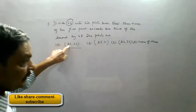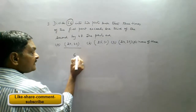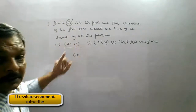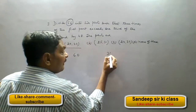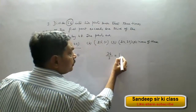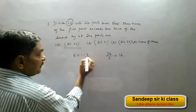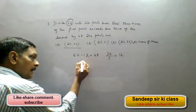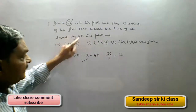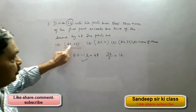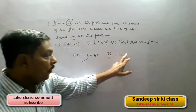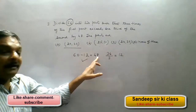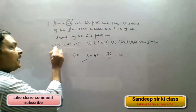Checking option A (20 and 36): 3 times the first part is 3 × 20 = 60. One-third of the second part is 36 ÷ 3 = 12. Subtracting, 60 minus 12 equals 48, which matches the given condition. Hence option A is correct and we need not check the other options.